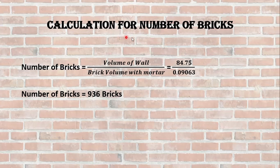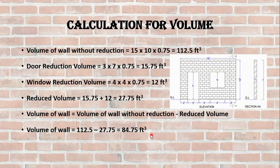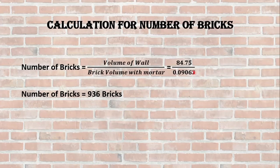Now we will calculate the number of bricks. For that we will use the formula: volume of wall divided by brick volume with mortar. The volume of wall is 84.75, as you can see we calculated it here, and we will divide it with the brick volume with mortar. So the total number of bricks would become 936.